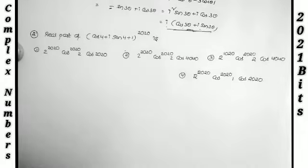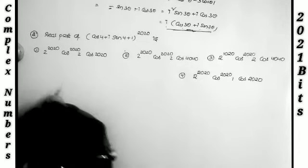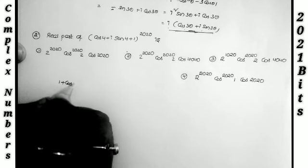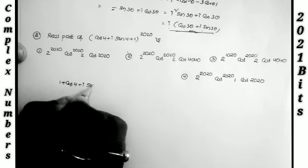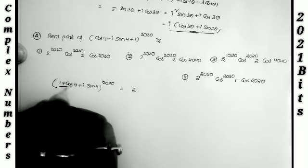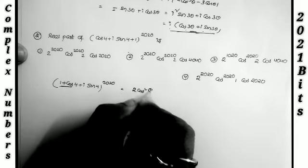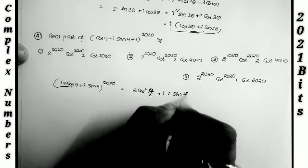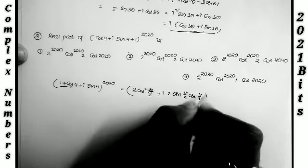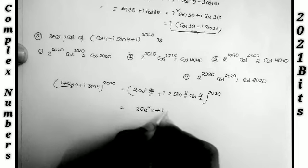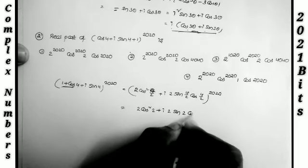Next question: what is the real part of (1 + cos 4 + i sin 4)^2020? First I apply trig identities: 1 + cos θ = 2cos²(θ/2) and sin θ = 2sin(θ/2)cos(θ/2). So 1 + cos 4 + i sin 4 = 2cos²2 + i·2sin 2·cos 2.